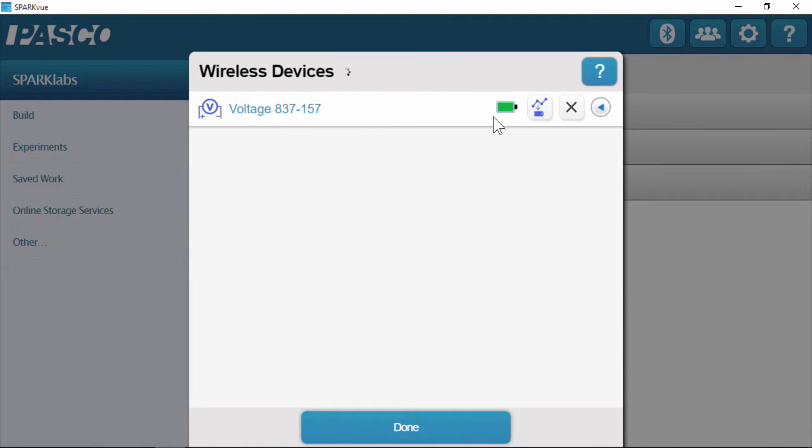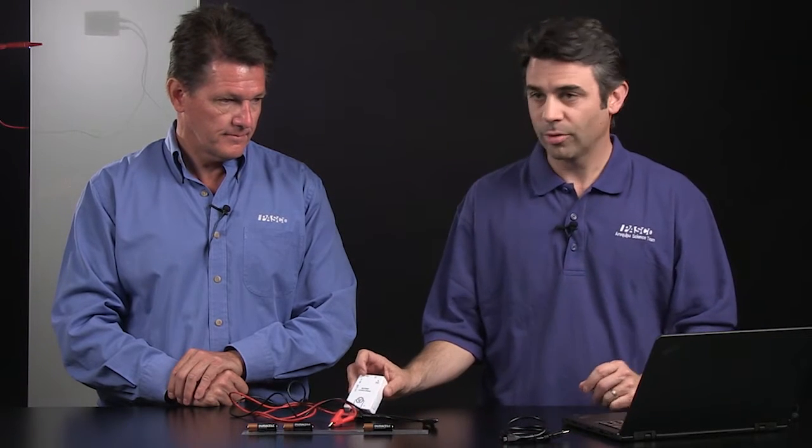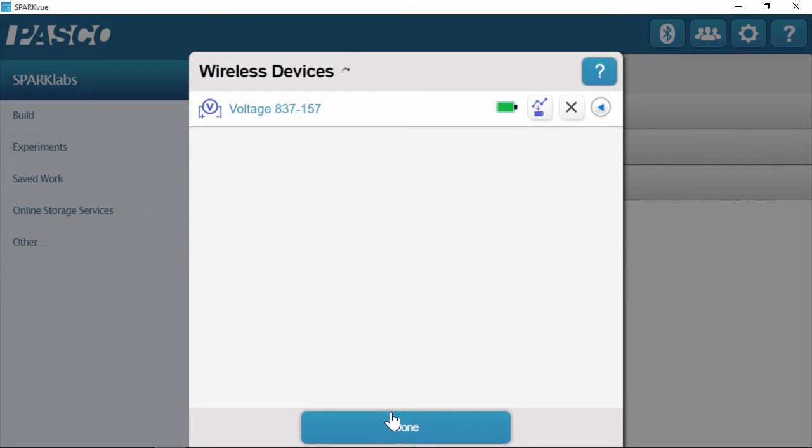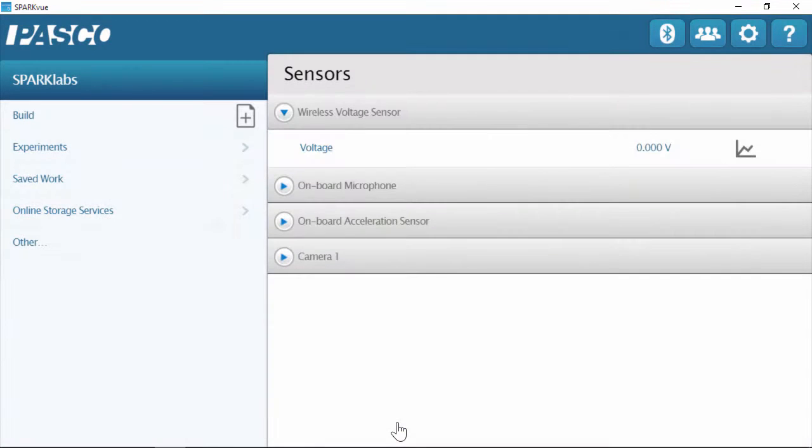Now that it's connected, I see a green battery indicator here and an indicator over here. So that's connected. I'm going to hit done, and I'm ready to go. So on my home screen, I can now see a voltage of zero, which is what I would expect.